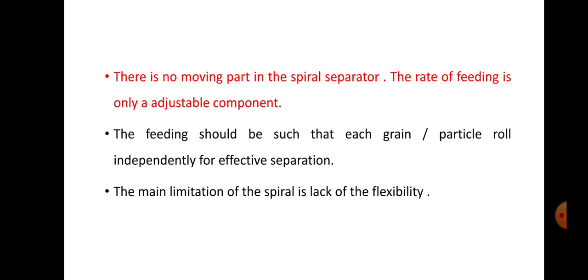This type of separator has no moving parts and does not require any electric power to operate. We only need to feed grains at the top of the machine. The only adjustable component is the rate of feeding — that is, at what rate we feed grain at the top. Some spiral separators are also provided with a controlling gate to regulate the feeding rate.